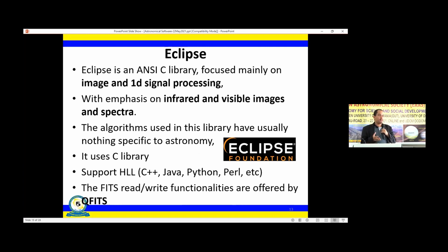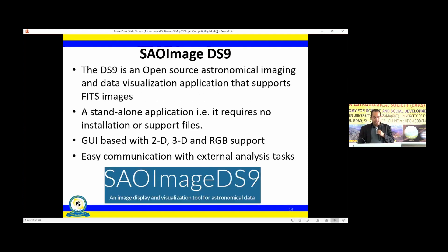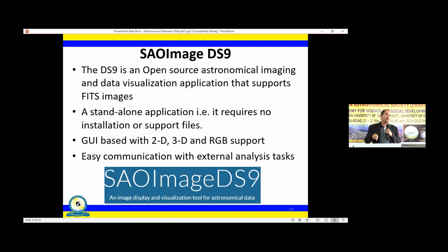Eclipse is a C-based library software you can use for image reduction and processing of signals. It is integrated with higher-level programming languages like C++, Java, and Python. You can do data reduction of FITS files using Eclipse. We also have DS9, an open-source astronomical imaging and data visualization application. It supports FITS files — once you have downloaded your signals and have the FITS files, you can use DS9 to do data visualization.